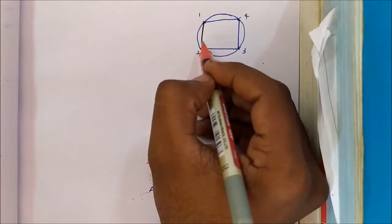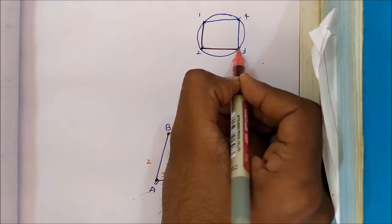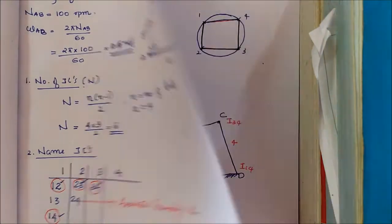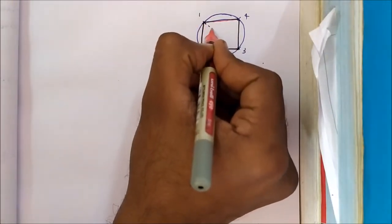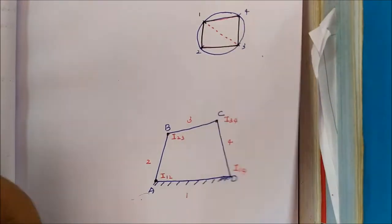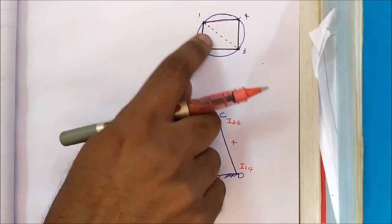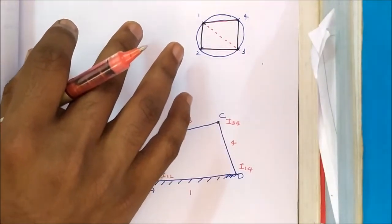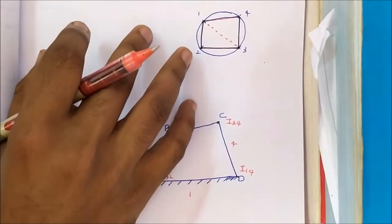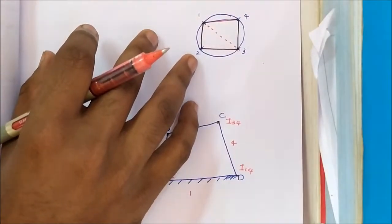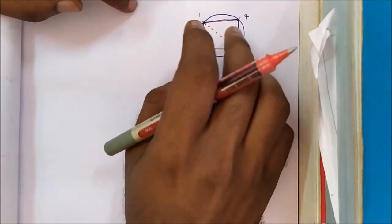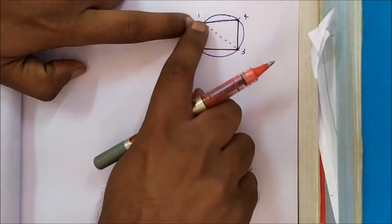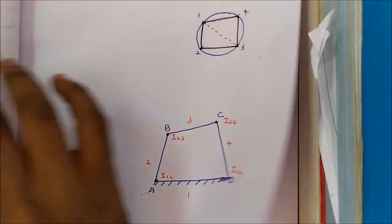That means: 1-2 is an instantaneous center, 2-3 is an instantaneous center, 3-4 is an instantaneous center, 1-4 is an instantaneous center. We apply Kennedy's theorem: if three links are in relative motion to each other, then they will form three instantaneous centers which will lie on a fixed straight line.